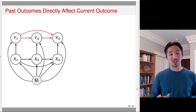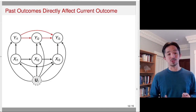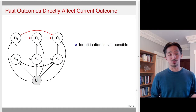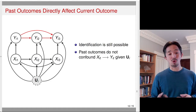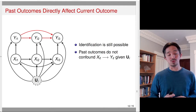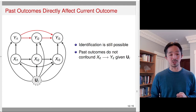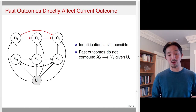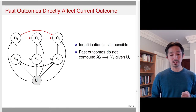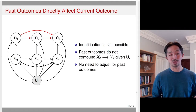What happens if past outcomes actually directly affect the current outcome? I added red arrows to the previous DAG to show this. Fortunately, identification is still possible in this case. The reason is that past outcomes do not confound the x_it–y_it relationship given U_i. So as long as we have fixed effects and account for U_i, we don't need to adjust for past outcomes because they are already controlled by adjusting for the fixed effects.